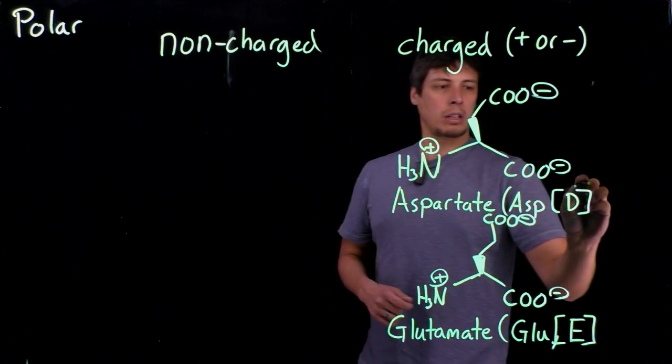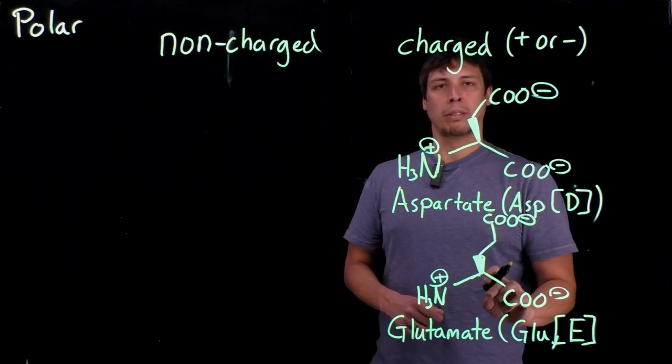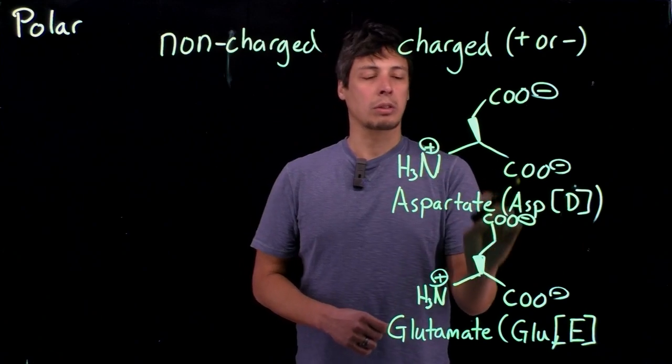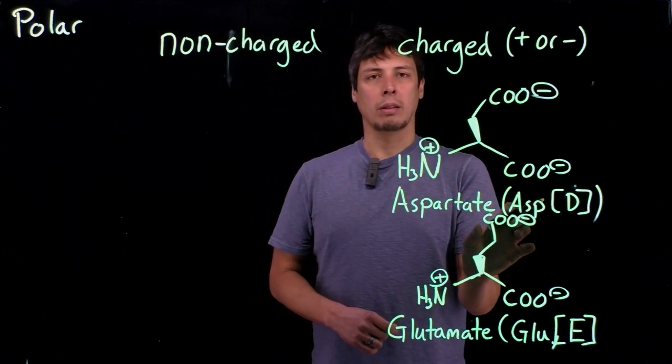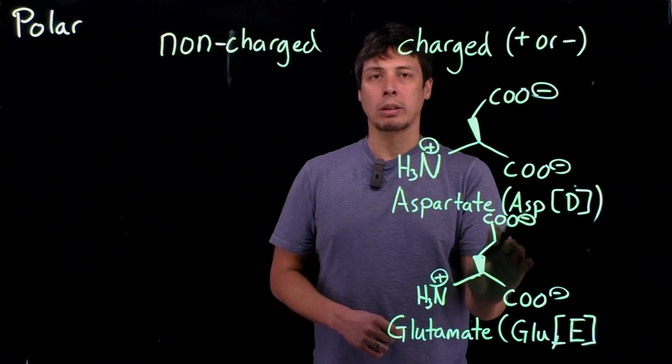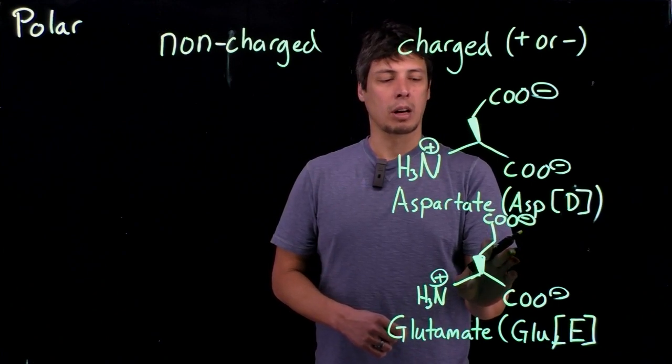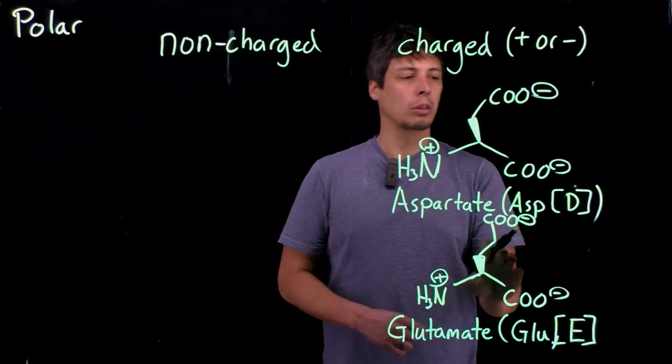Okay, so aspartate and glutamate, very similar in structure. They both have carboxylate side groups. There's just one additional carbon on the side chain of the glutamate.